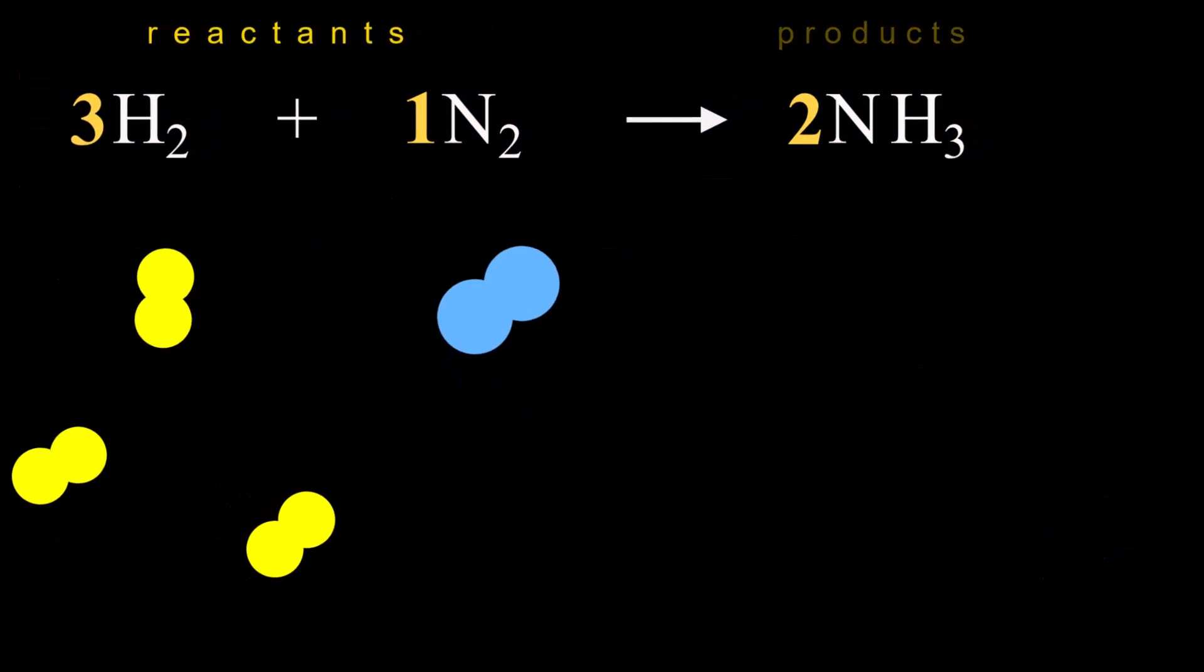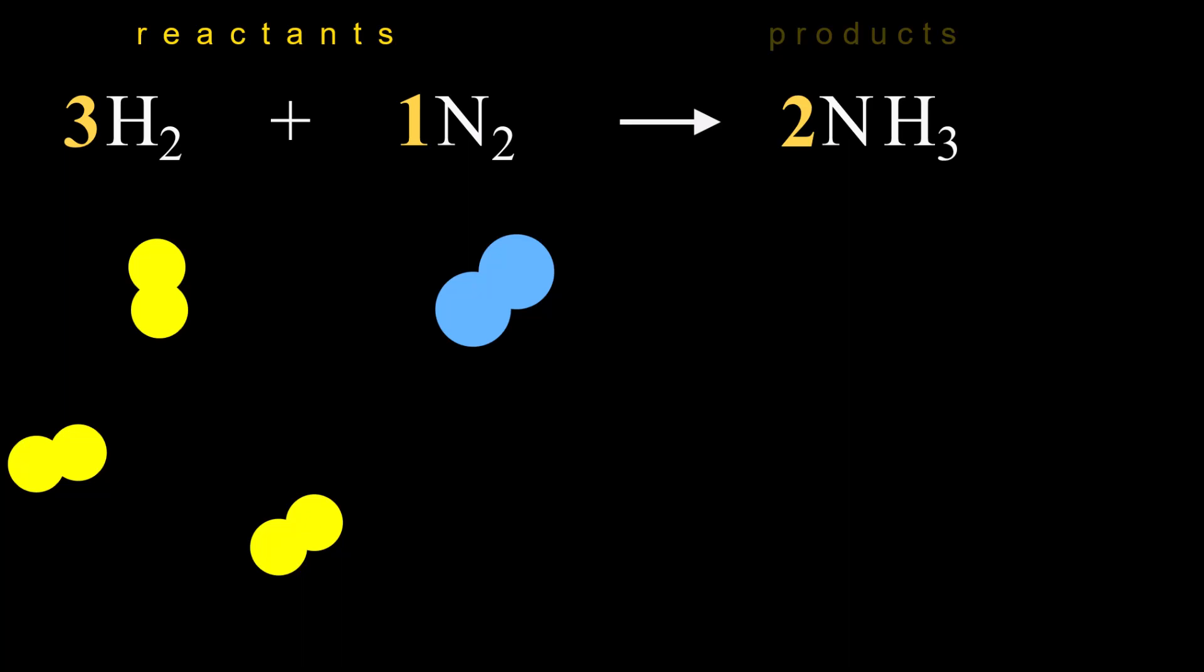So now let's look at probably the most neglected as well as the most important part of the equation, the arrow. What is that arrow telling us? It tells us the reactants are becoming products, that the substances on the left are turning into the substances on the right. In this case, hydrogen and nitrogen are turning into ammonia. How does that happen? It's all hidden in the arrow.